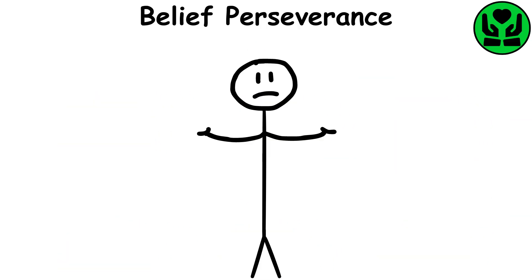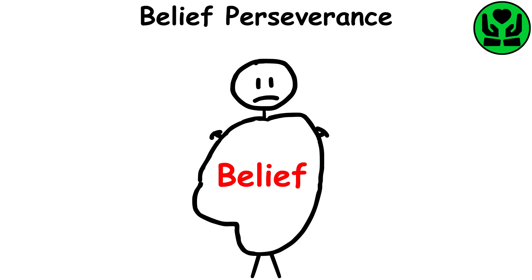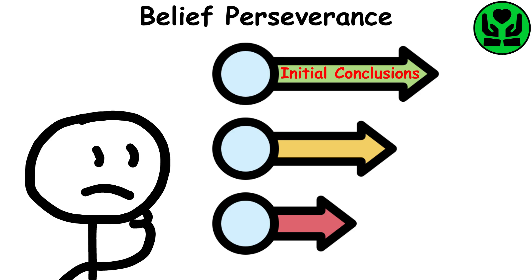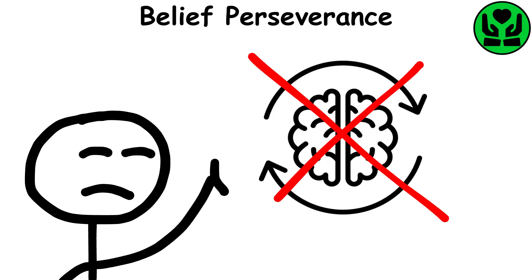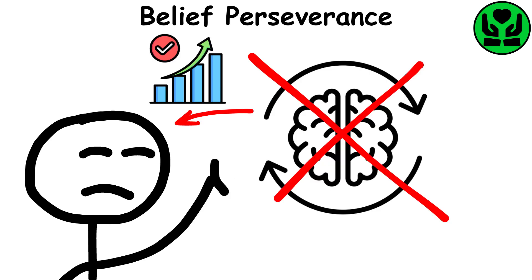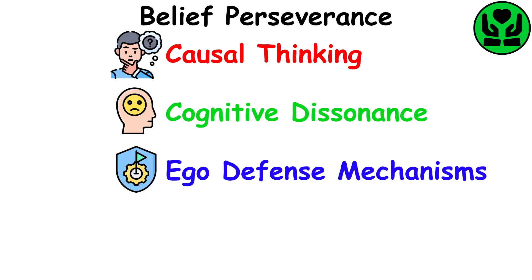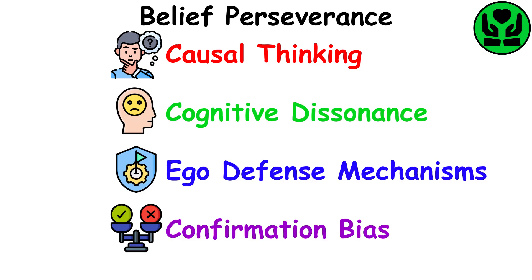Belief perseverance. This describes how we continue to hold on to established beliefs even when faced with clear contradictory evidence. We tend to prioritize our initial conclusions and resist changing our minds, even when it might be in our best interest to do so. Causal thinking, cognitive dissonance, ego defense mechanisms, and confirmation bias are the reasons we hold tight onto our beliefs.